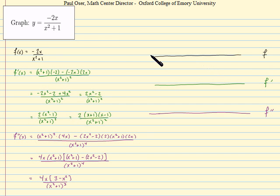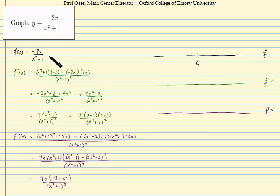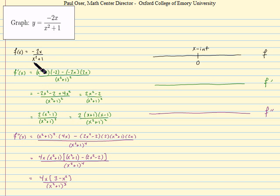Considering the first line — the original function f — a fraction can only be 0 if the numerator is 0, and here that only happens when x itself is 0, so we mark that on our line. Graphically, f equals 0 means we're sitting right on the x-axis, so this represents an x-intercept. As for where f is undefined: the denominator is x squared plus 1, and since something squared plus 1 is always at least 1, the denominator is never 0, so we mark no additional points on this line.